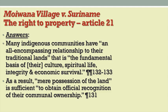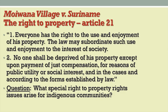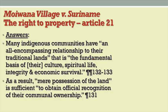The court is adopting an evolutionary or evolutive interpretation of the right of property. Notice that the text of Article 21 is written in the singular: everyone has the right to the use and enjoyment of his or her property, and no one shall be deprived of his property except in the circumstances listed. That suggests the right of property is an individual or private right. But the court, in its analysis of how this right applies to indigenous communities, recognizes communal or collective ownership. That's an example of an evolutive interpretation of human rights law, which we saw in the context of the European human rights system in earlier lectures.